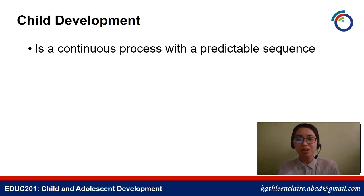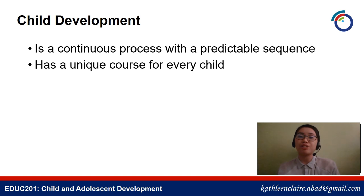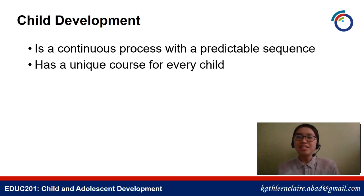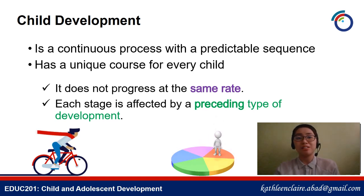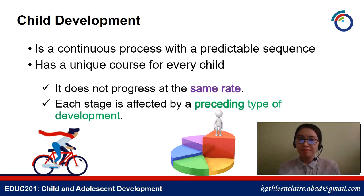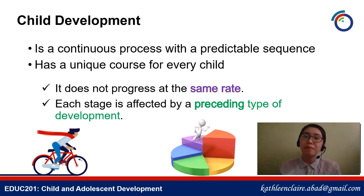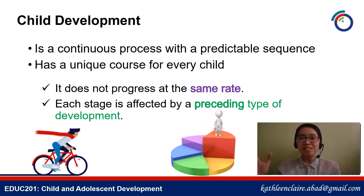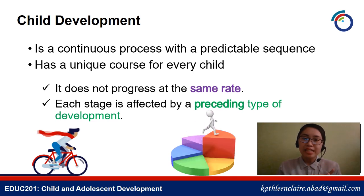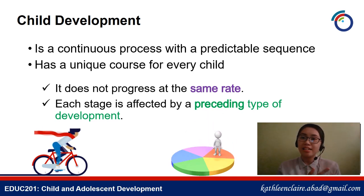Child development is a continuous process with a predictable sequence but has a unique course for every child. It's not the same for every child — we have milestone guides, like reaching a certain skill by a certain age, but it's not final. What's applicable to Pedro doesn't mean it's applicable to Juan or Maria. Also, it does not progress at the same rate. For example, if you were late in learning to speak, consequently you might also be late in learning to write — because speaking precedes writing, so it's a domino effect.